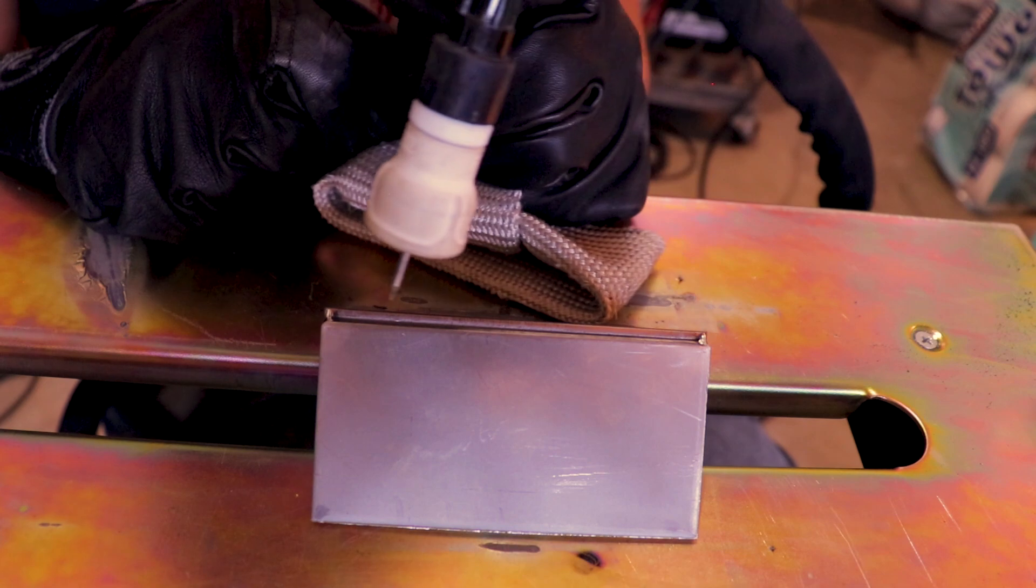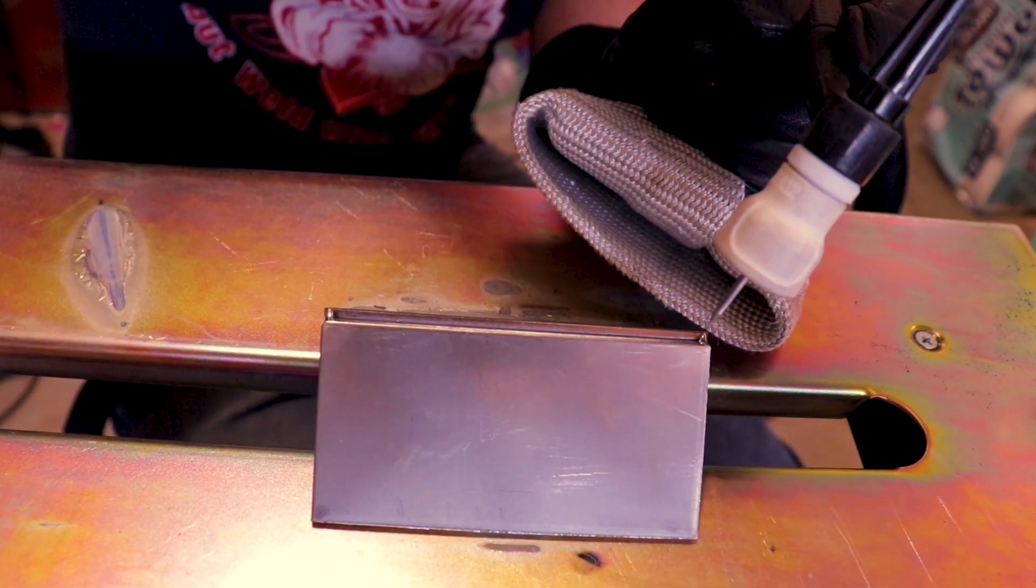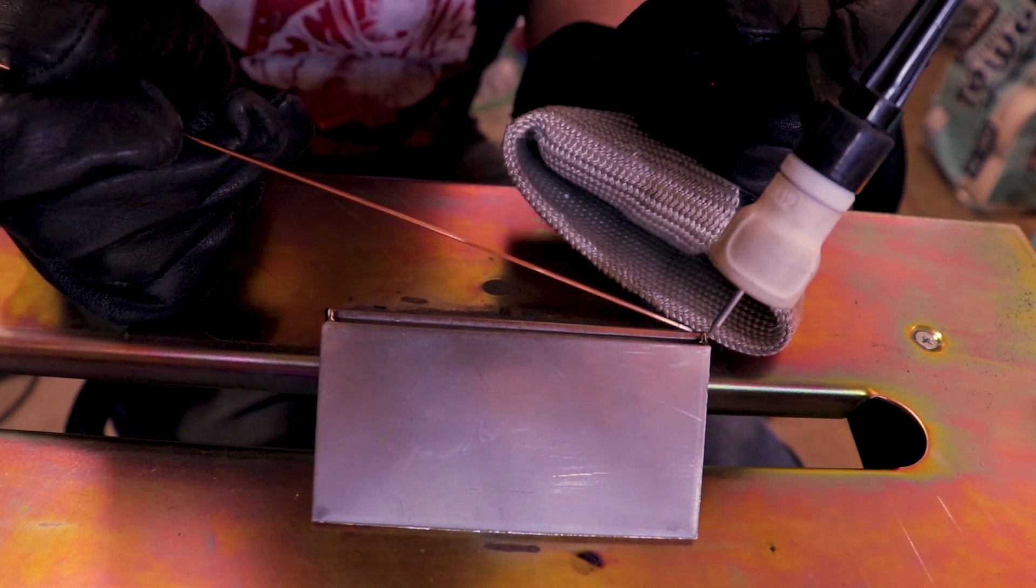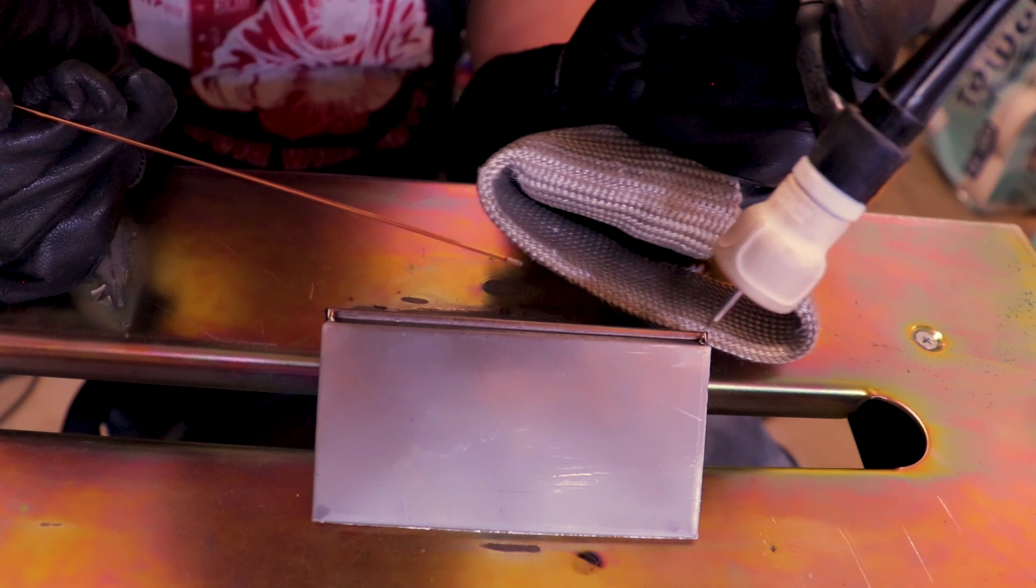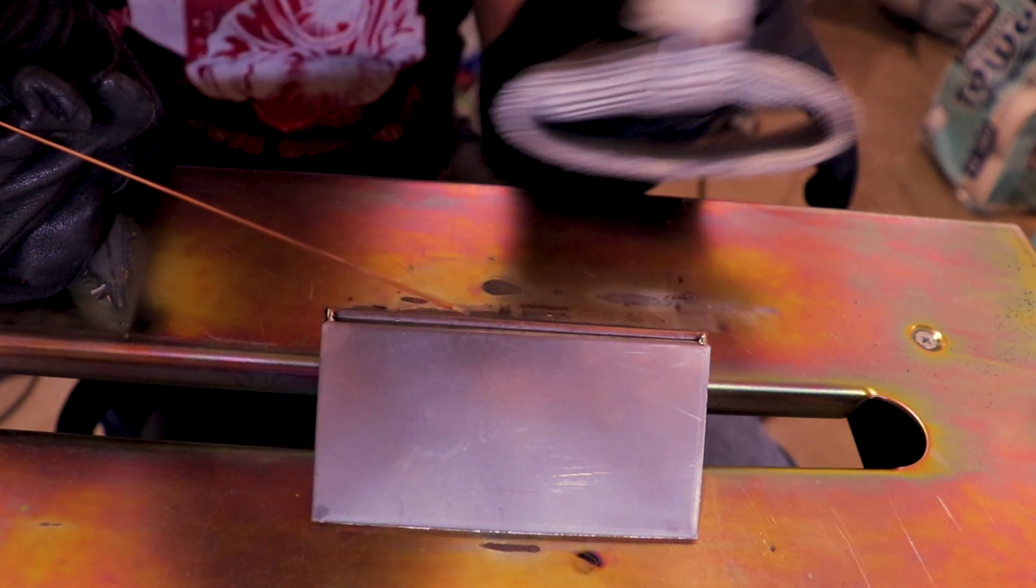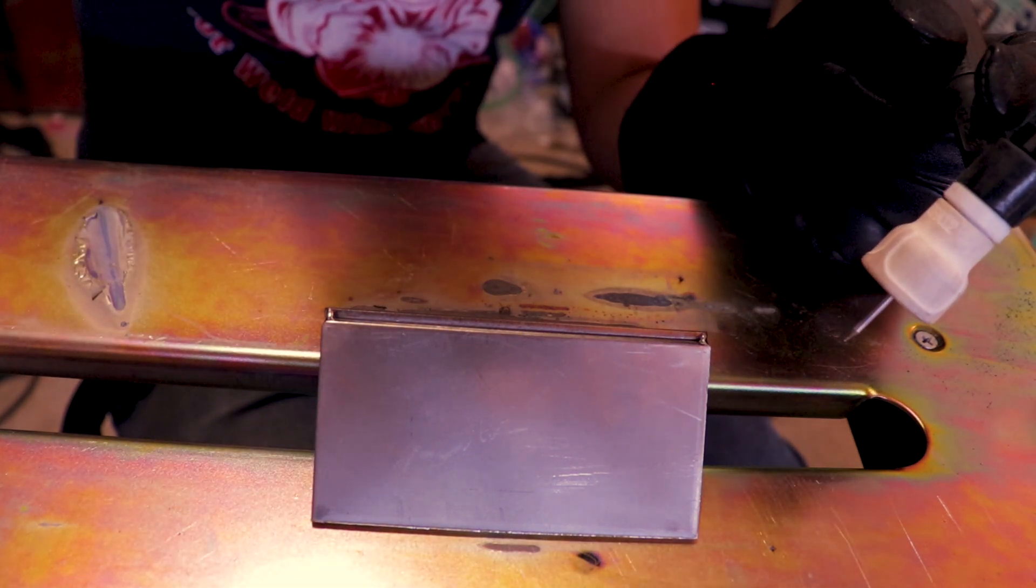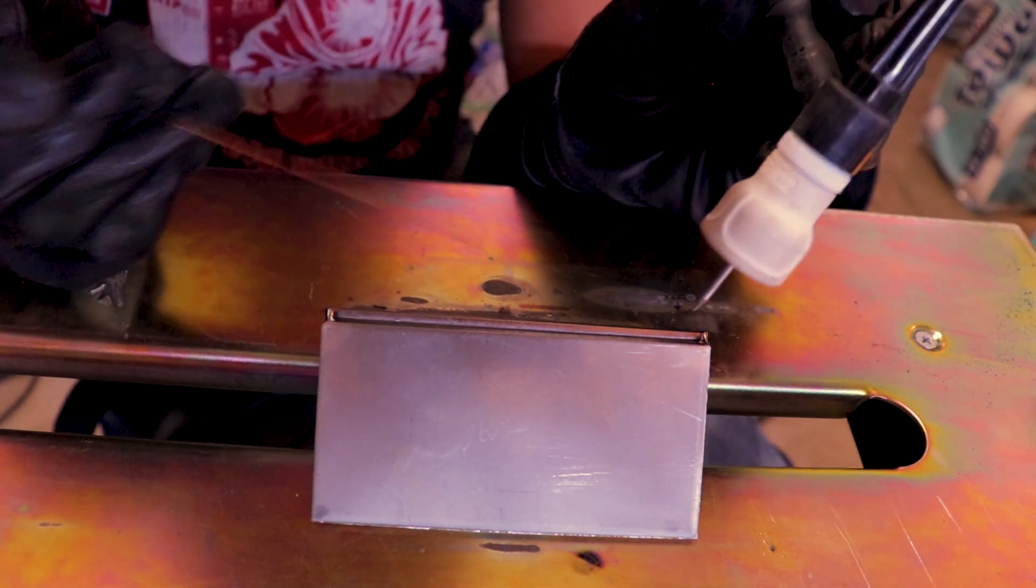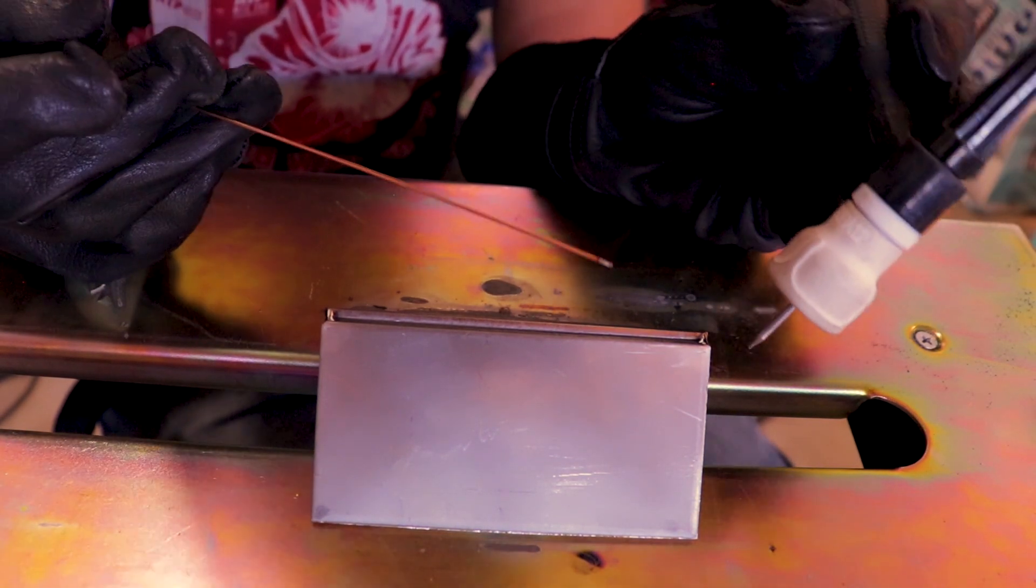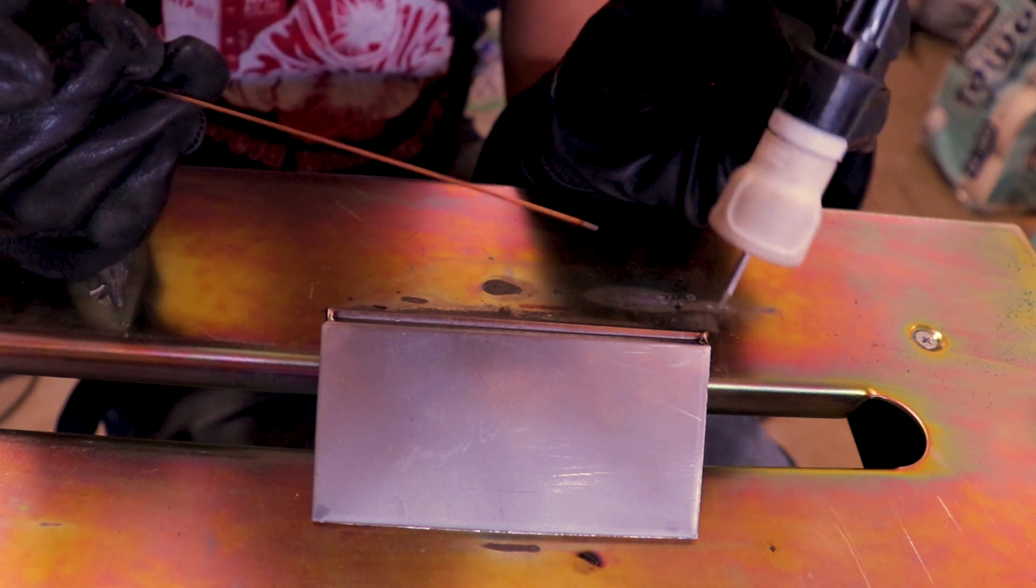But if I'm running this you should be able to see it. So when you run your root pass, you're using the thin wire and all you're doing is trying to get a consistent speed and usually pretty dang fast. Because the more heat you put into a part, the more strength it loses.